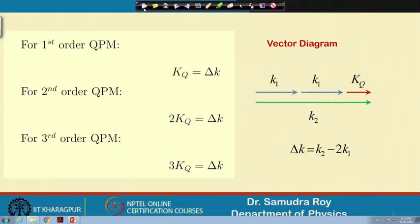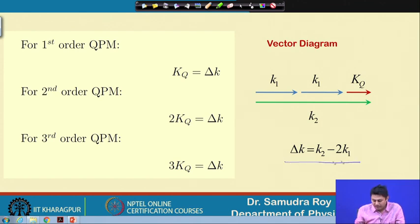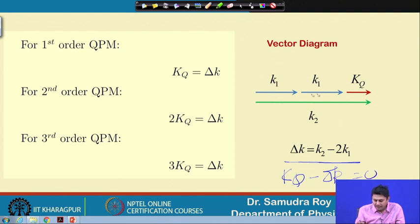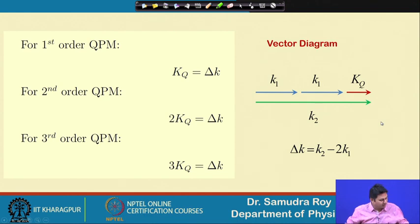In conclusion of quasi phase matching: in the vector diagram for collinear phase matching, Δk = k_2 minus 2k_1, and the first-order condition is k_q minus Δk = 0. In the vector diagram, Δk is represented as a vector and k_q is the additional vector associated with the periodic d function. This concludes the study of quasi phase matching.